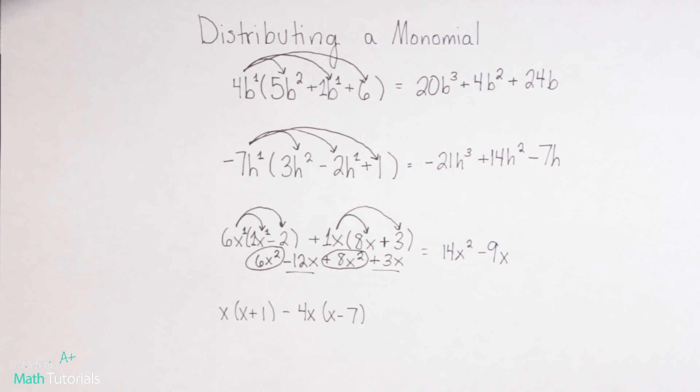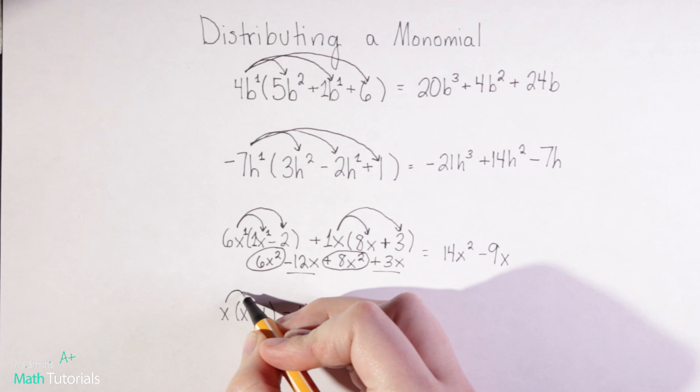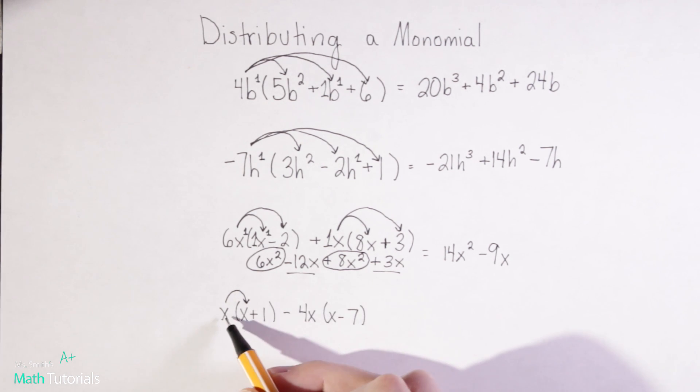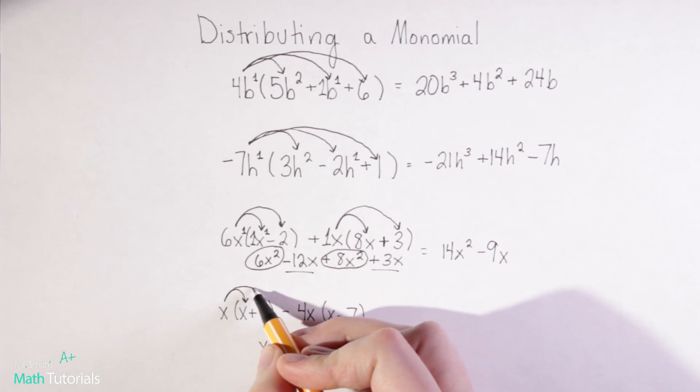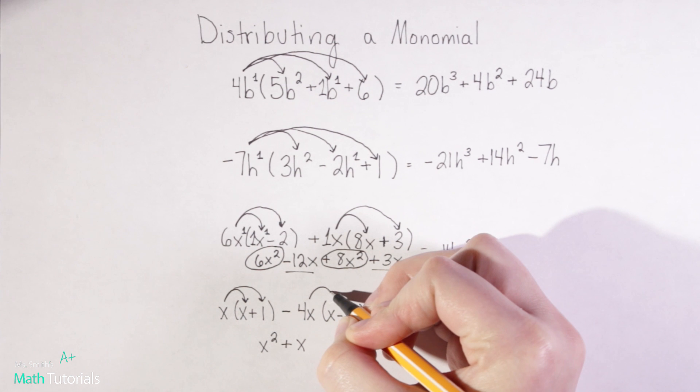Our next example is very similar to this one only you'll notice that instead of having an addition sign, this is a negative, negative 4x. So really again same rules apply, you just have to be really careful with your signs whenever you're dealing with negatives. So we'll distribute this x to our first set of parentheses. X times x is x squared. X times positive 1 would be positive 1x.